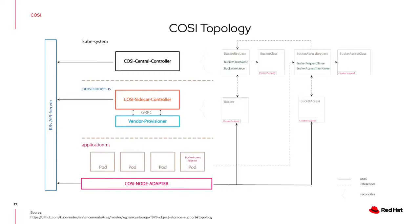The architecture of Cozy essentially has four main components: the Cozy Central Controller, the Cozy Sidecar Controller, the Cozy Node Adapter, and lastly the Vendor Provisioner. The Vendor Provisioner communicates with the sidecar through gRPC, and the sidecar is Kubernetes-aware. On the right, you can see the relationship between some of the different objects. A bucket request references the bucket class, and a bucket access request references a bucket access class.